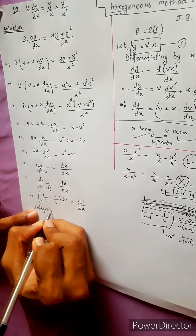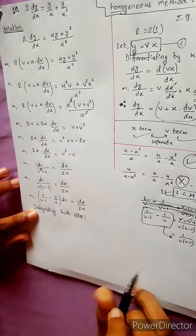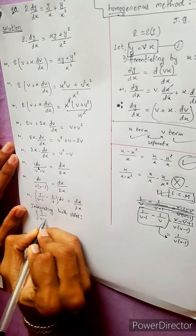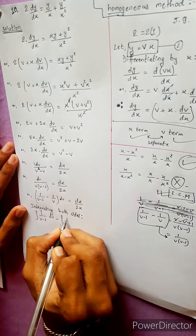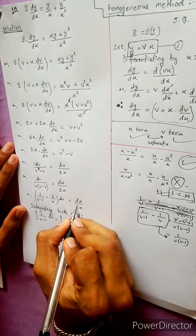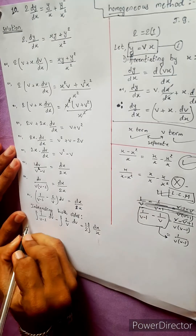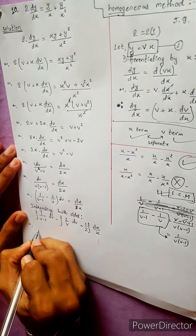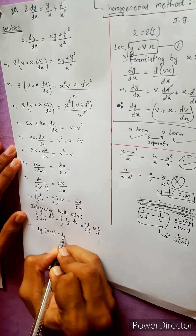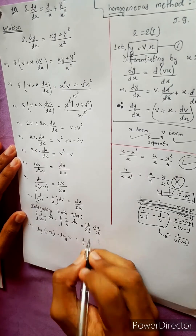Integrating both sides: integral of 1/(v minus 1) dv minus integral of 1/v dv equals integral of dx divided by 2x. This gives log(v minus 1) minus log(v) equals one half log(x) plus constant.